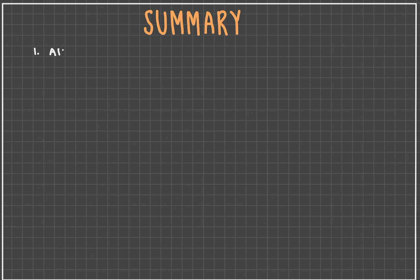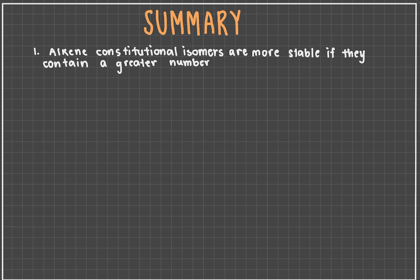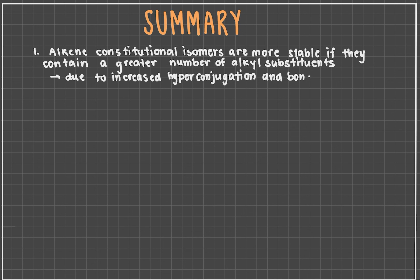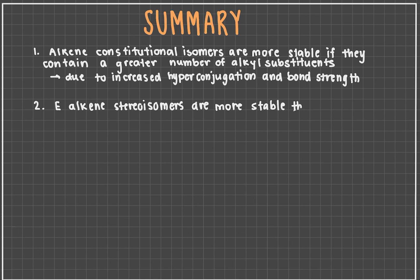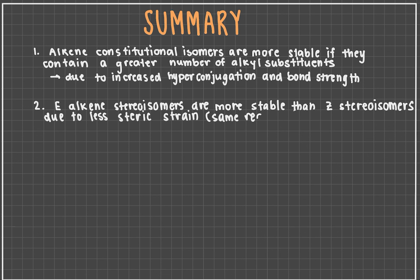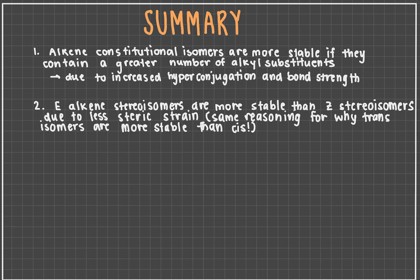In all, let's summarize what we went over in the video. Alkene constitutional isomers are more stable if they contain more alkyl substitution around the double bond, due to increased hyperconjugation from adjacent sigma bonds to the carbon-carbon double bond and because of increased bond strength from greater s-character of hybridized orbitals. Alkene stereoisomers are more stable in the E configuration versus Z configuration and in the trans-configuration versus the cis-configuration, due to fewer electronic repulsions in bulky high-priority groups, decreasing the steric strain within the molecule. That's all we have time for today. Thank you for tuning in to learn about the relative stability of alkene isomers. For more practice and chemistry fun, please visit www.chemistrytalk.org. Thank you!